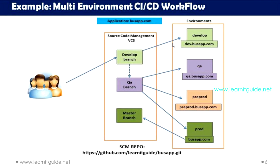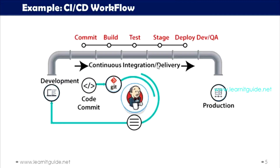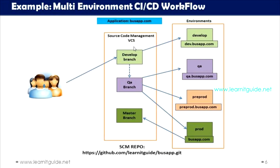Let's look at the multi-environment CI/CD workflow. Previously we saw the simple CI/CD workflow from code development to deployment. But how can this be achieved with multiple environments? After testing, the code goes to a staging area, then to a higher environment, and finally to the production environment. For all of this, the code development should have a dedicated branch for each environment for smooth CI/CD. In source code management, you will have different branches created for your environments — for the development environment, a develop branch; for QA, a QA branch; for pre-prod, a pre-prod branch; and for production, a prod branch.